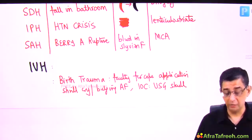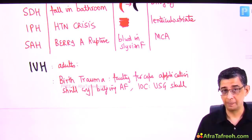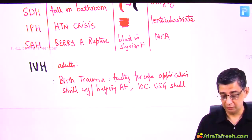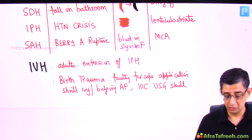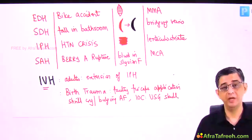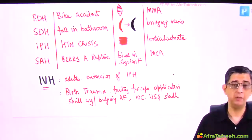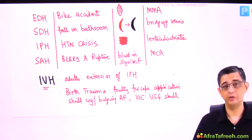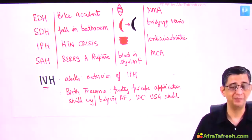In adults, intra-parenchymal hemorrhage can extend into the ventricles, causing intraventricular hemorrhage as well. In total, five types of CNS bleeds have been discussed in this lecture. Thank you for your patience — keep learning and you will definitely achieve better scores and performance in the final exam.